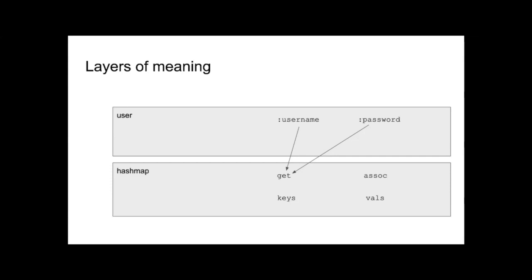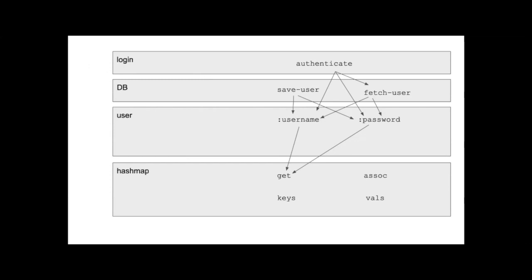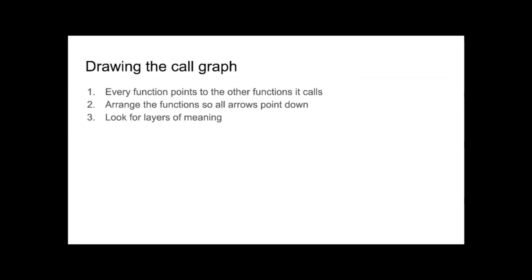We can define new layers on top of the user layer — for example, a layer for how we store the user in the database, which needs to know the expected keywords. We can also define another layer for login routines, with a function called authenticate that takes a user and compares passwords. Notice we can add layers of meaning both through interpreting data and through the intent of our code. The intent might be to log in a user — a higher, more specific intention than just a user record.